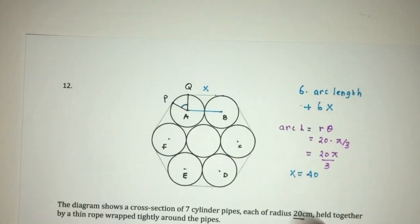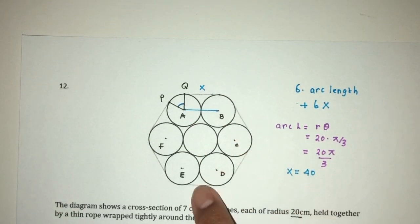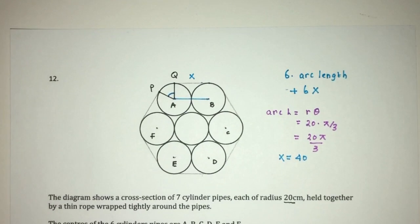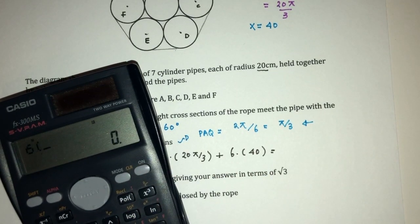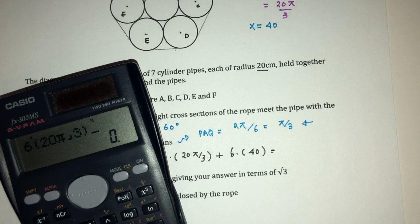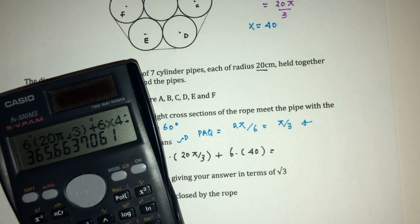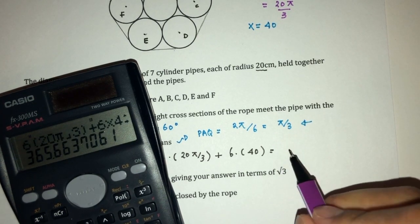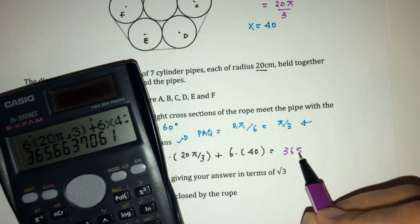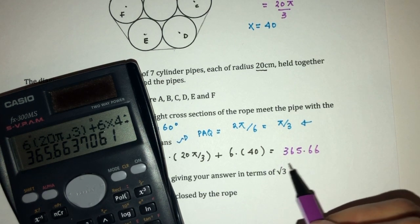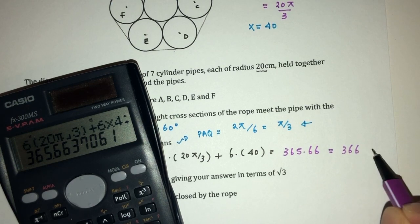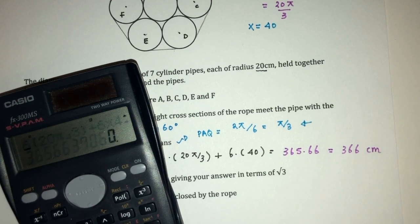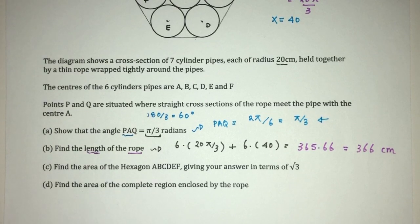As we can see, it is the same everywhere because the circles are the same size. Six times 20π over 3 plus six times 40. That will be 365.66. Now, obviously, correct to 3SF, you can write 366, and that will be in centimeters for the length of the rope. That will be part B of the question.